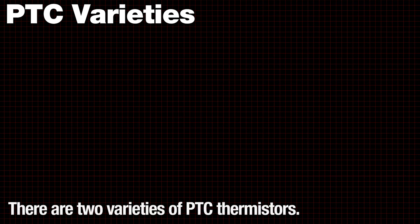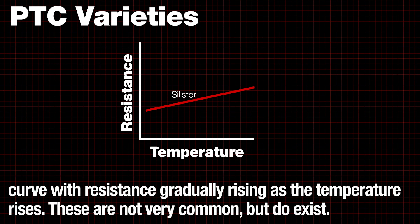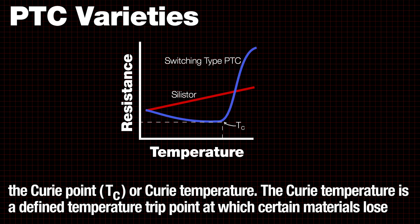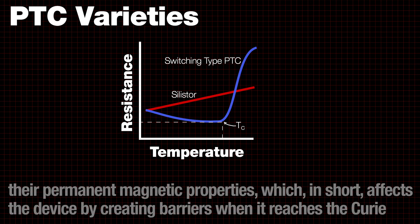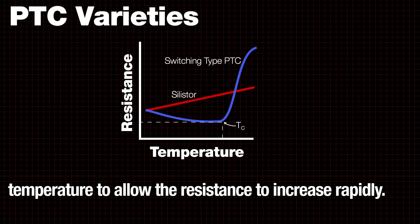There are two varieties of PTC thermistors. The first is a silicon-based thermistor called a silister, which has temperature characteristics that follow a linear temperature curve, with resistance gradually rising as the temperature rises. These are not very common, but do exist. The second is a switching type. These behave like an NTC thermistor until they cross a temperature barrier called the Curie point, or Curie temperature. The Curie temperature is a defined temperature trip point at which certain materials lose their permanent magnetic properties, which in short affects the device by creating barriers when it reaches the Curie temperature, to allow the resistance to increase rapidly.